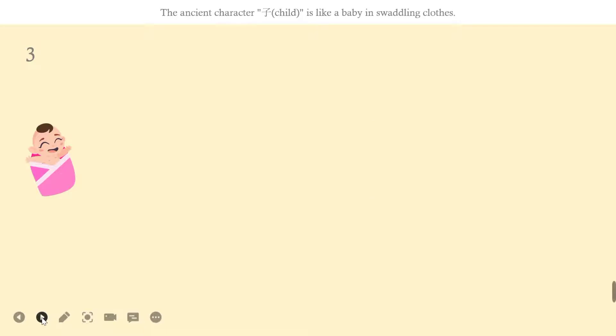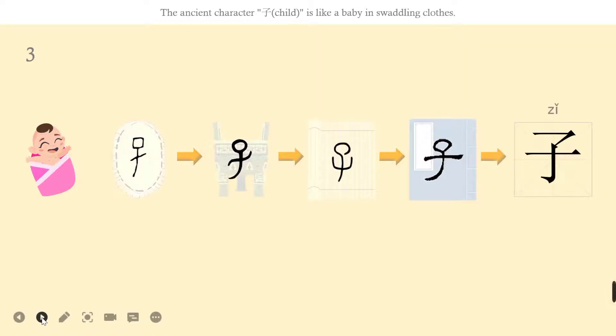Let's learn the third character, zǐ. You can see a baby wrapped in clothes. The ancient character zǐ looks like a baby in swaddling clothes. You can see his head and his cute hands. Its original meaning is child.